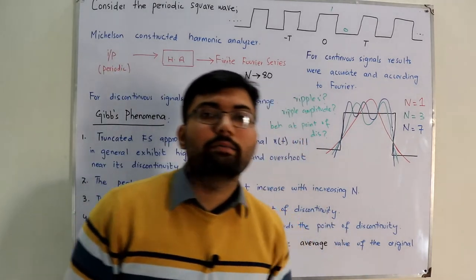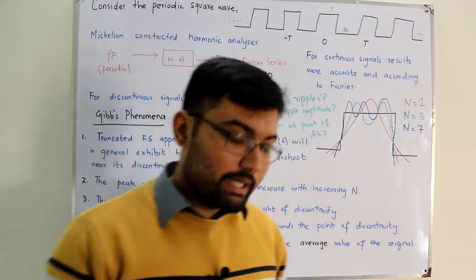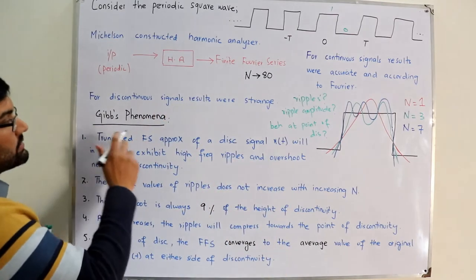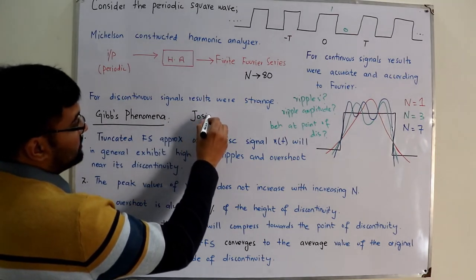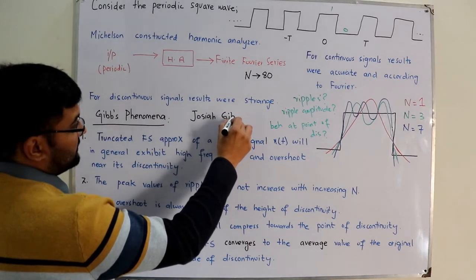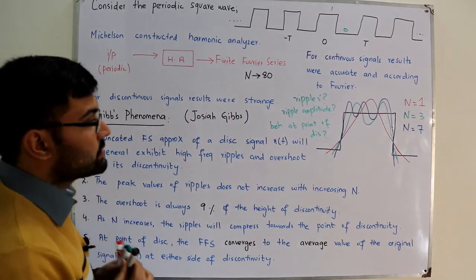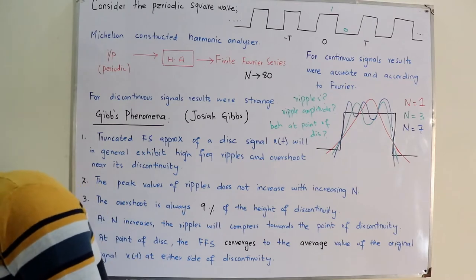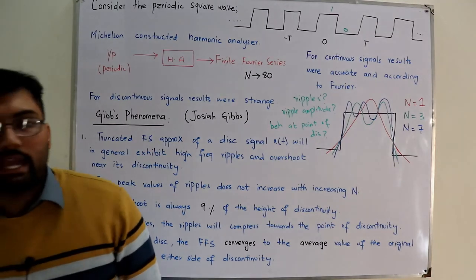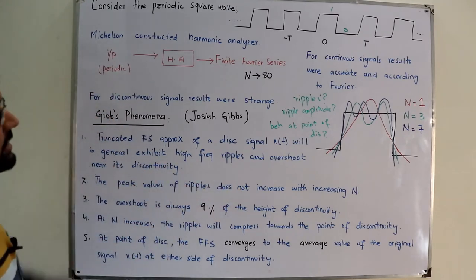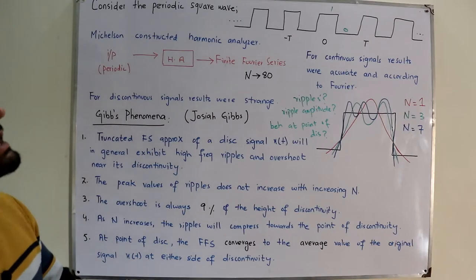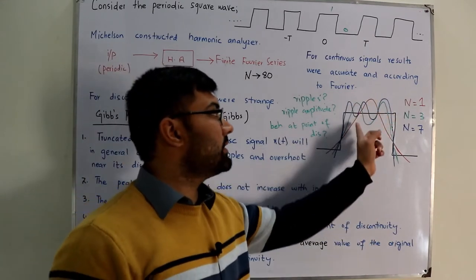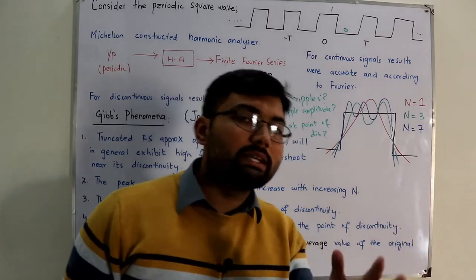These were the questions Michelson had in mind — he said the results were strange and he was unable to explain the phenomenon. He presented his questions to scientist Josiah Gibbs, who after analyzing them gave his theory, known as the Gibbs phenomenon, explaining what is happening for n=1, n=3, and n=7.